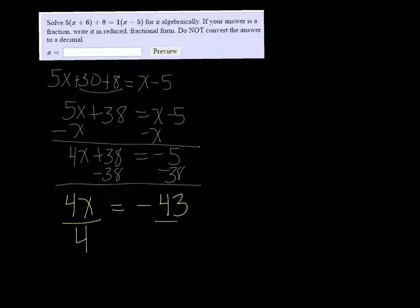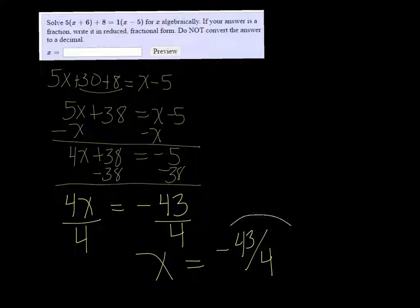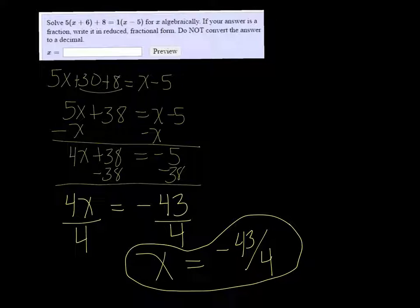Divide both sides by 4, and x = -43/4. It doesn't want us to put this in as a decimal, so we're just going to leave that as a reduced fraction, because we can't reduce 43/4.